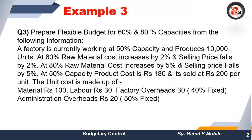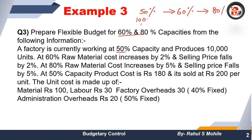The question is: prepare a flexible budget for 60% and 80% capacity from the following information. A factory is currently working at 50% capacity. In the question, 50% data has been given to us, and we have to calculate 60% and 80%. At 50% capacity, the factory is producing 10,000 units, so we need to cross-multiply to find units at other capacities.